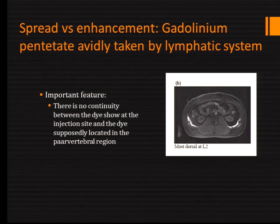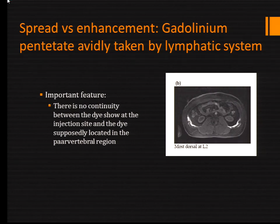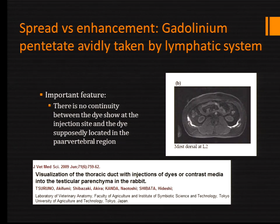What we need to differentiate here is between true spread and continuity. There is a spread between the deposit of local anesthetic and the paravertebral region, and some isolated dye enhancement. This is lymphatic spread of the dye — the dye was taken up by the lymphatic system and eventually concentrated in the thoracic duct. To give an example: you can inject in the testicles of a rabbit and eventually enhance the thoracic duct. The dye was taken up by the interstitial tissue lymphatic system and concentrated at higher levels — so there's no evidence of true spread, only lymphatic uptake.